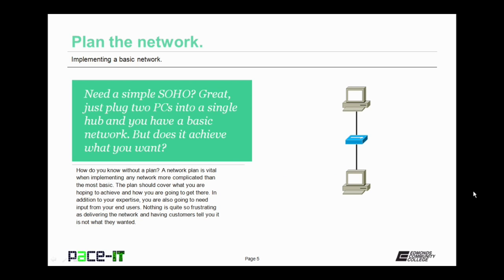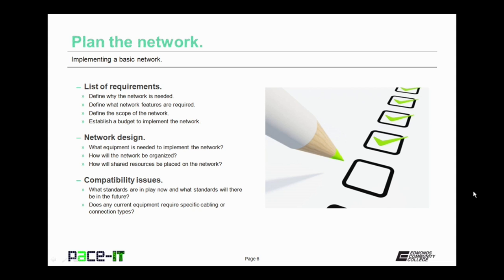So you need a simple small office home office network? Great, just plug two PCs into a single hub, and you have a very basic network. But does it achieve what you want? How do you know if you don't have a plan? A network plan is vital when implementing any network more complicated than the most basic of networks. That plan should cover what you are hoping to achieve and how you are going to get there. You are also going to need input from your end users — nothing is quite so frustrating as delivering the network you've planned and built, only to have the customer tell you it is not what they wanted or needed.